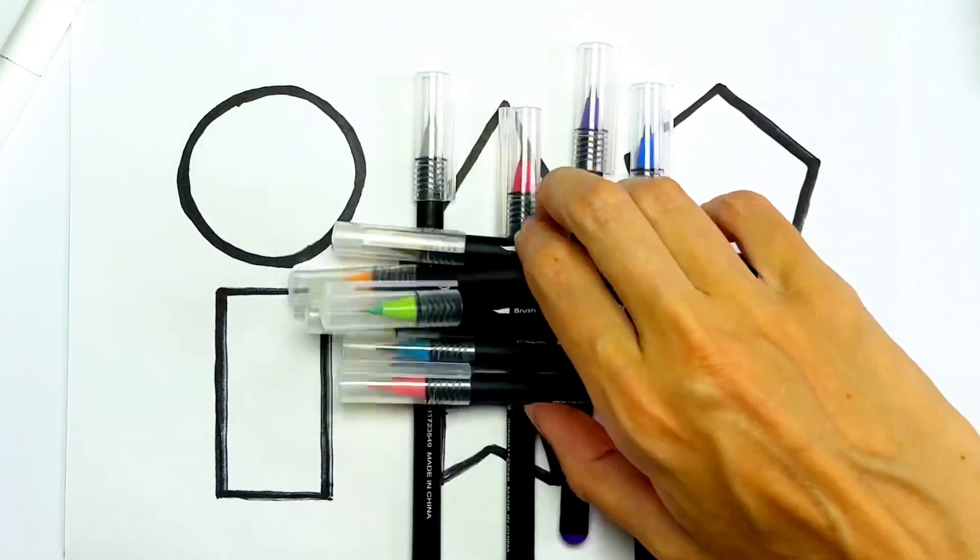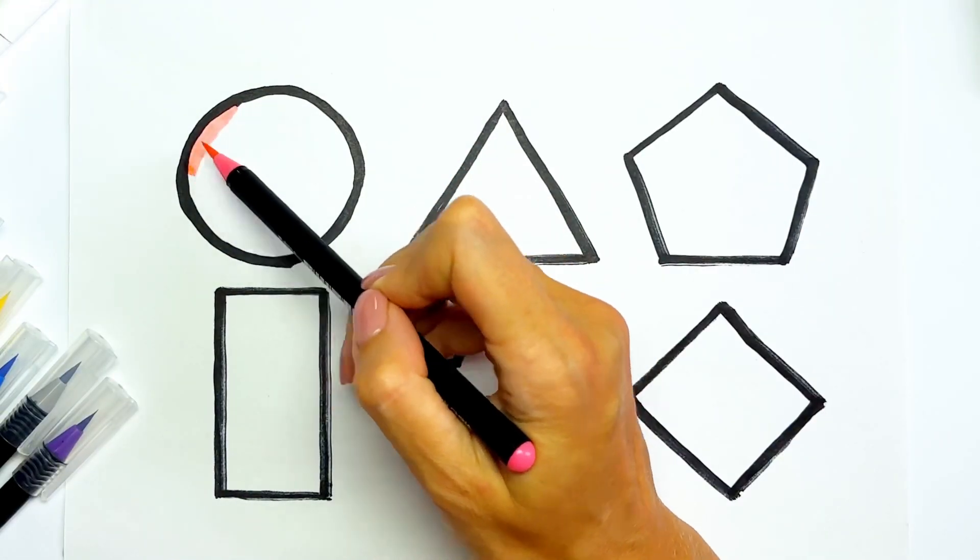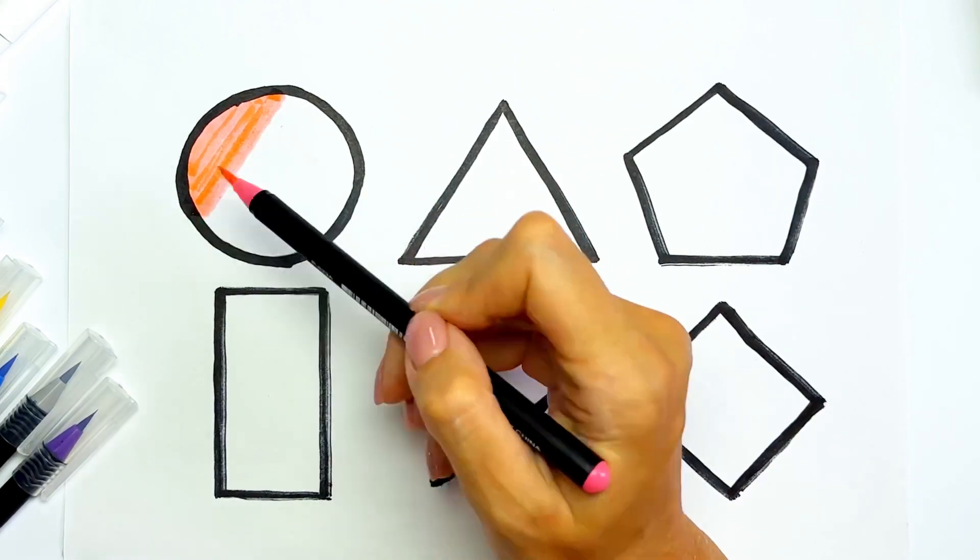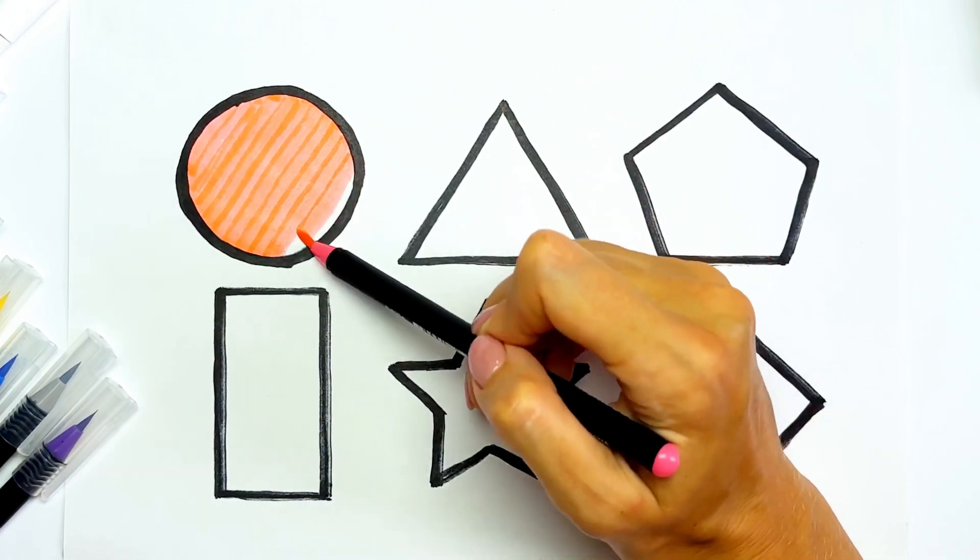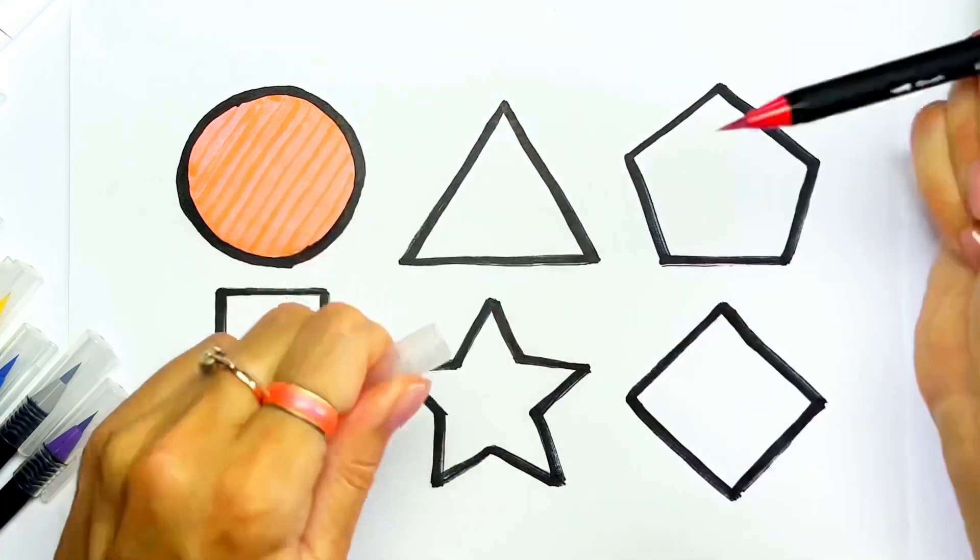And I'll take pink color for circle. Pink circle. Red color for triangle.